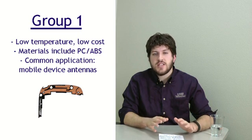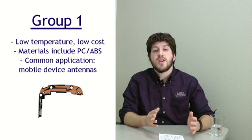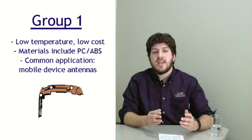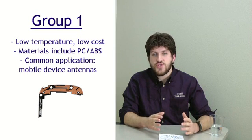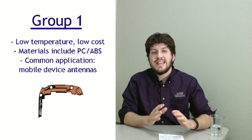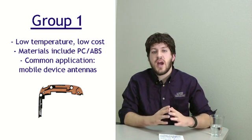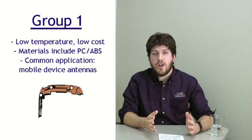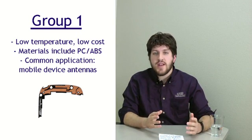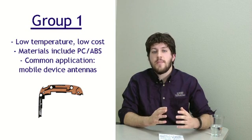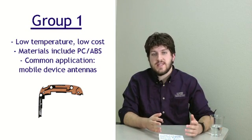There are three main categories of LDS grade materials. The first includes low-temperature, low-cost materials, including a very common plastic PC/ABS. Now materials in this group, while they have high impact strength, generally need to be used in an environment where there's not going to be very high temperatures at all. So you're looking at applications where no soldering is required. And a very common application in this group includes mobile device antennas.